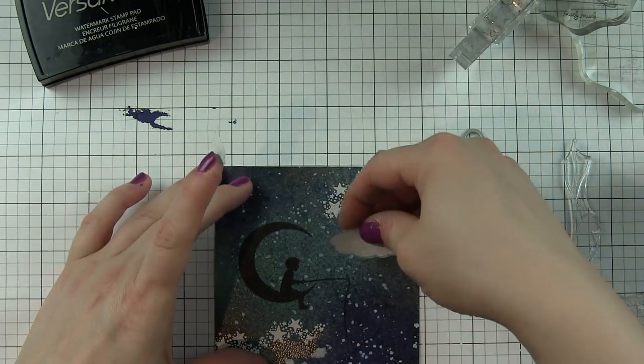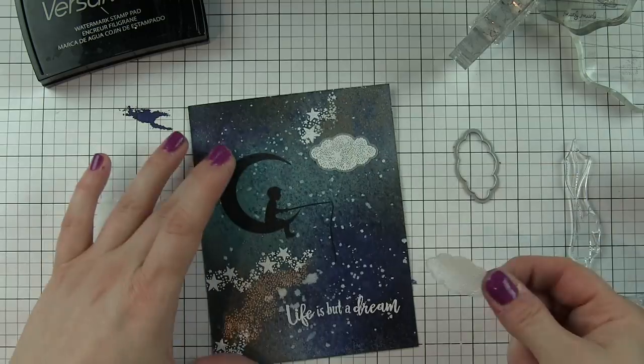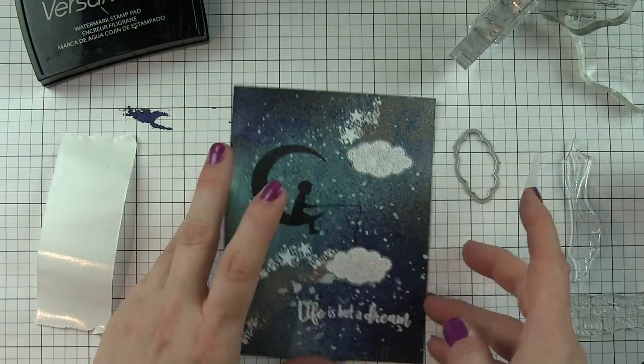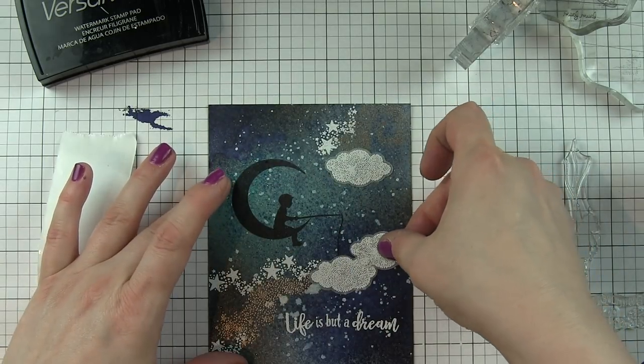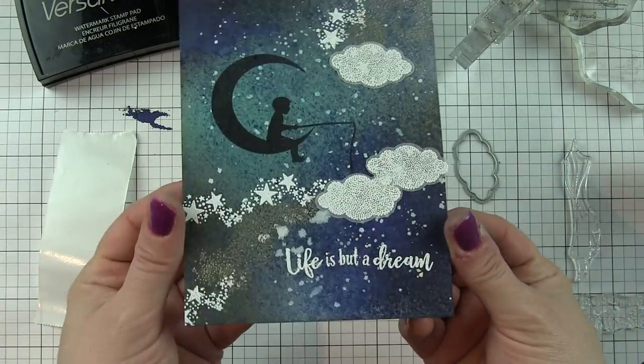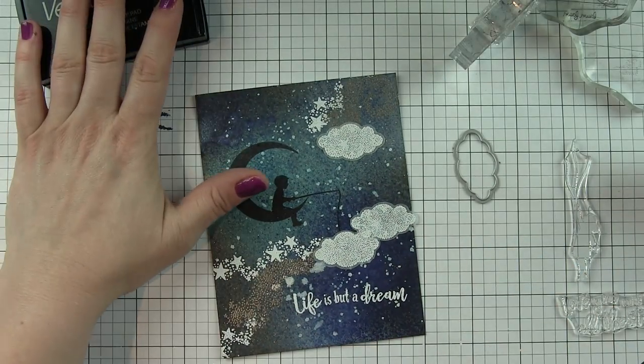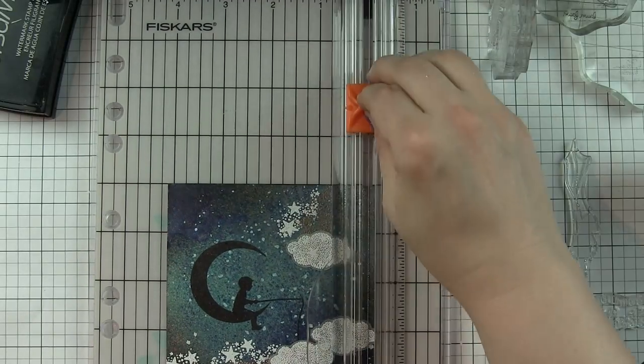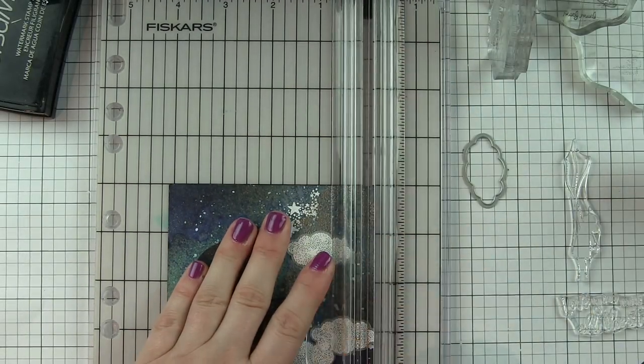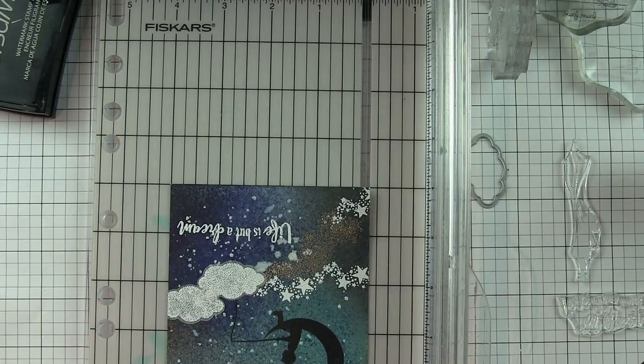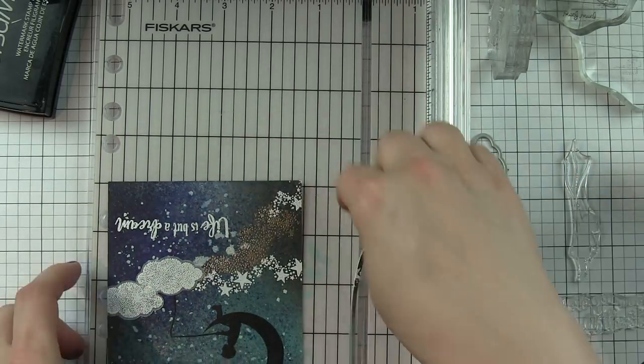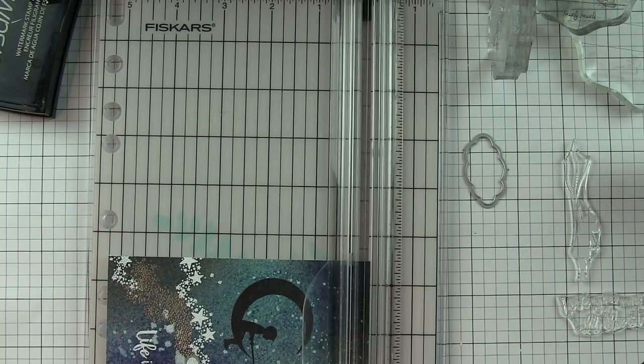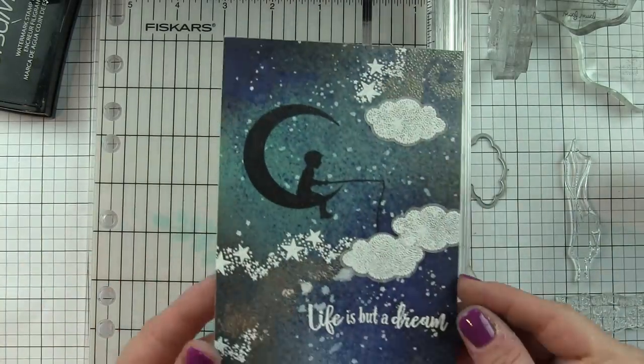A couple of the clouds are going to be down here near where the fishing line that little boy is holding, so it looks like he's fishing into the clouds. Then one kind of up near the top. So two of the clouds on each card are overlapping just a little bit, and then one is somewhere else, so a trio on each of all three cards. The last thing I did was I decided this is an A2 sized panel. I trimmed it down to about five and a quarter by four inches so that when I attached it to a white top fold card base, there would be a thin white border all the way around that mats it up, frames it up really nicely, and offsets all the white embossing on the card.